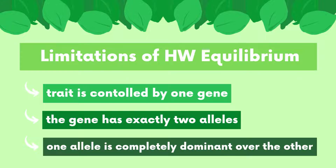That's just the standard basic pattern of inheritance that we all know. But it's important to note that in nature, these conditions are actually really hard to meet, since a lot of traits are controlled by more than one gene, and many genes have way more than two alleles controlling them. That's why Hardy-Weinberg Equilibrium is mostly used as a hypothetical scenario — more of a baseline for predicting allele frequencies.